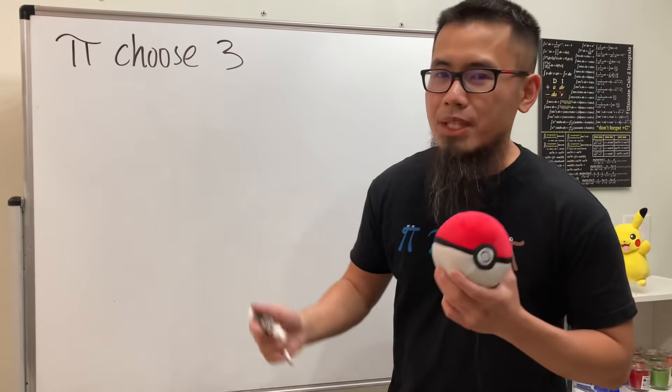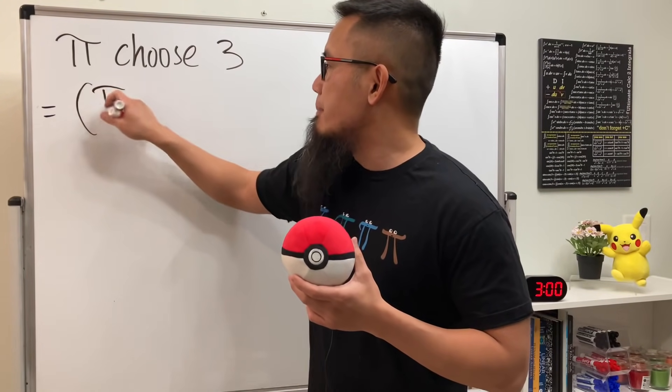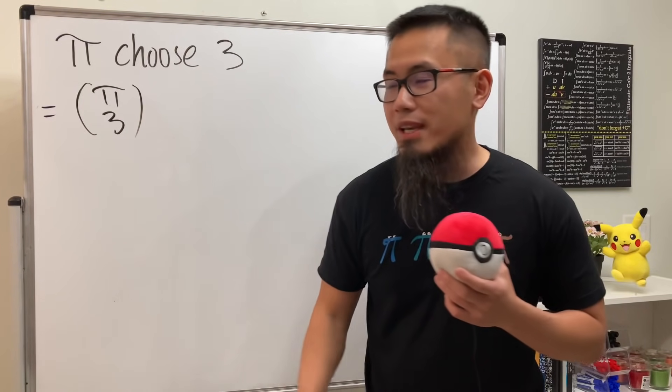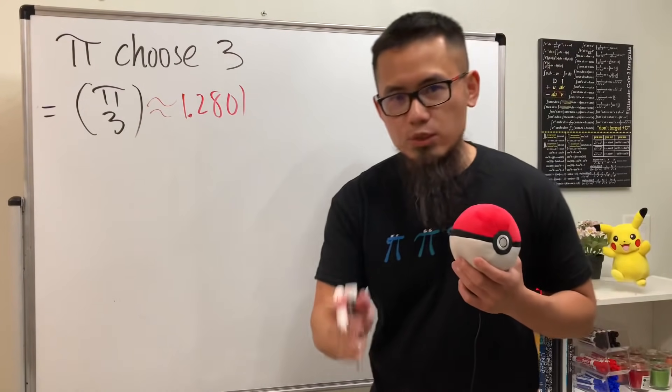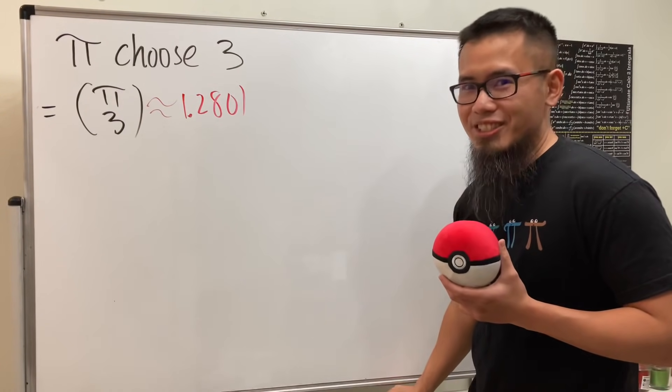Okay, what's the value for pi choose three? And let me tell you guys that the notation right here is yes, pi choose three. And now let me also tell you guys that the answer for this right here is approximately 1.2801. How did I do this? Yes, well from alpha, but of course I'll do this legitimately for you guys.